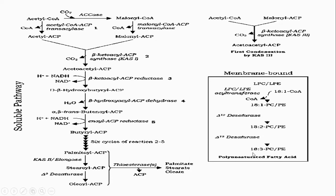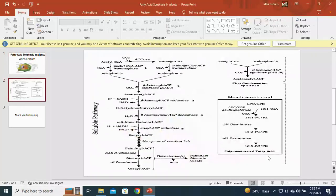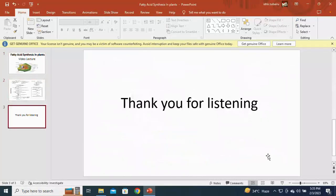So we have an 18-carbon atom with triple double bonds. This is how we produce polyunsaturated fatty acids. Thank you for listening.